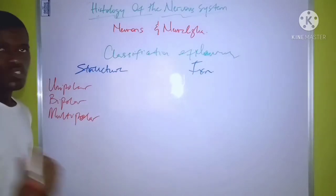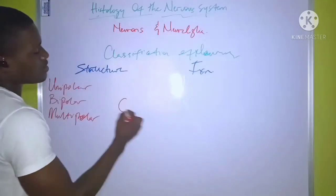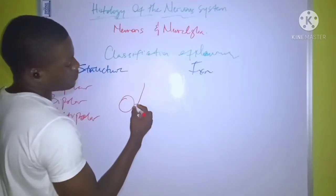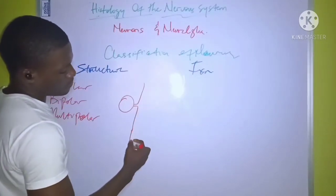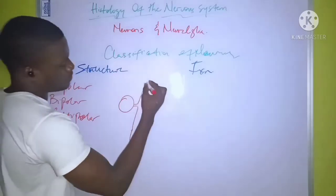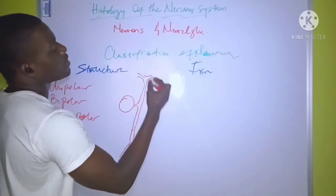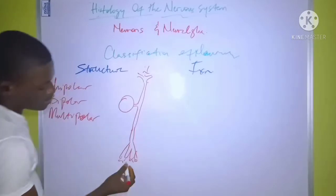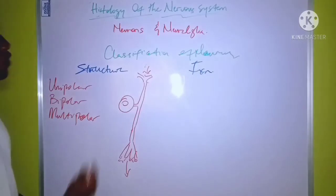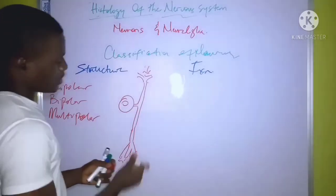The first one is the unipolar neuron. This kind of neuron has just one nerve fiber extending from it. If this is the cell body, the fibers or processes extending from it go in one direction. On one side we have the dendrites which receive impulse, and then the other end sends impulse outwardly. This is an example of a unipolar neuron — it has just one process extending from it.